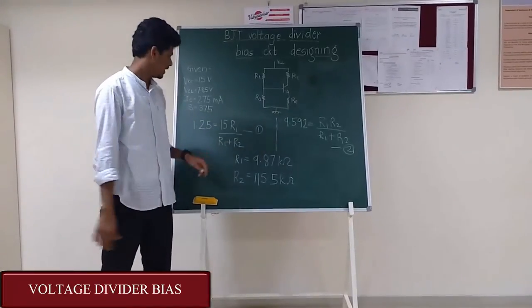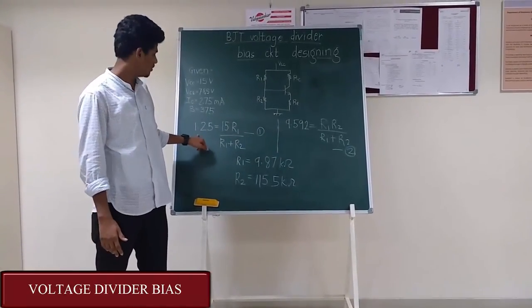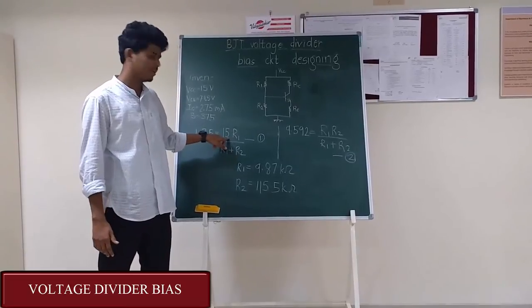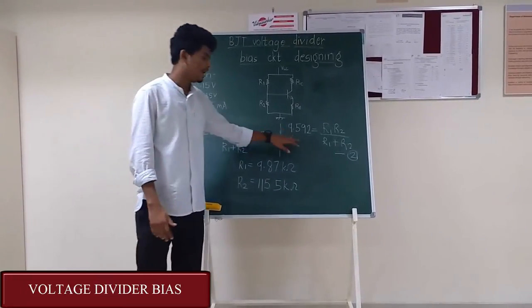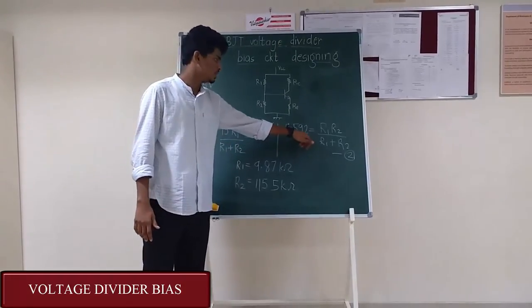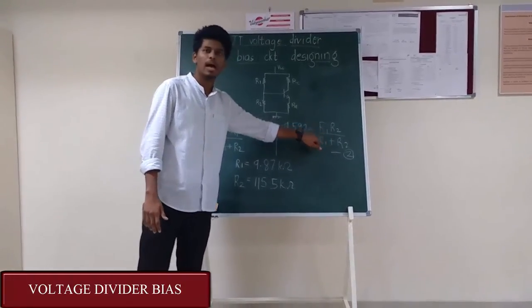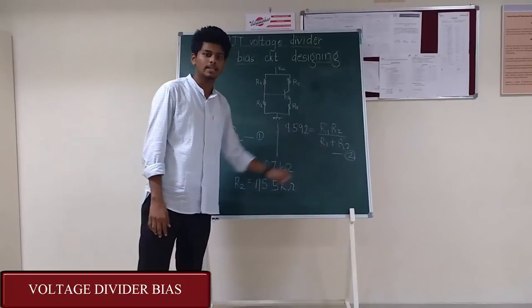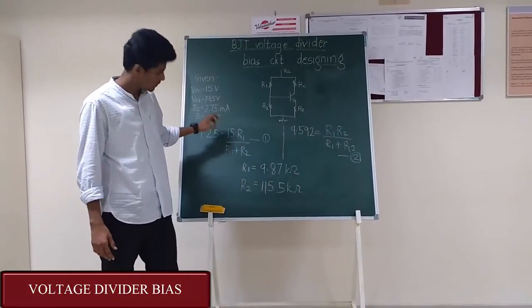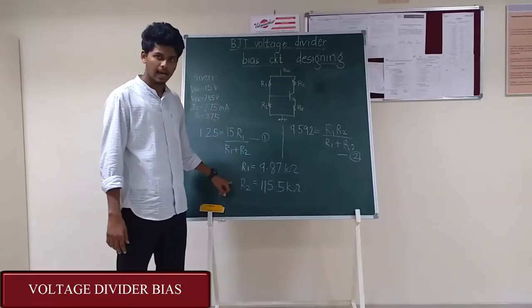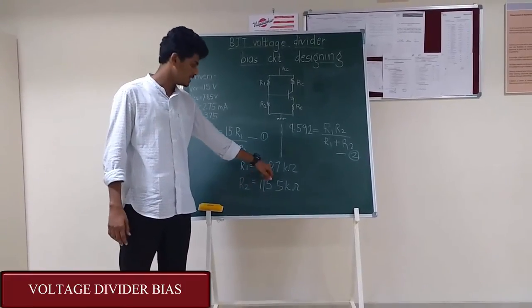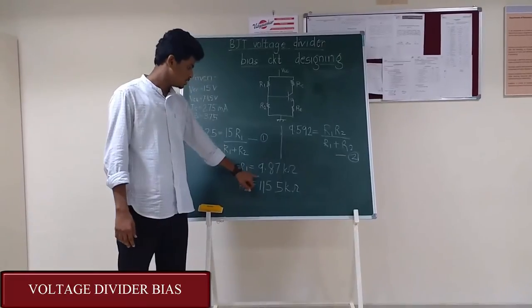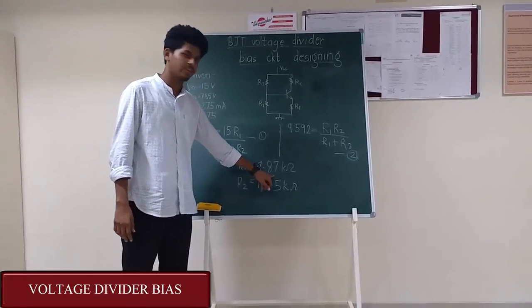Now here we can see that the two equations that we have got: 1.25 = 15*R1/(R1+R2) from VTH, and 9.592 = R1*R2/(R1+R2) from RTH. Therefore as we have two equations and two unknowns, we can find the value of R1 and R2. That comes out to R1 = 9.87 kilo ohms and R2 = 115.5 kilo ohms.